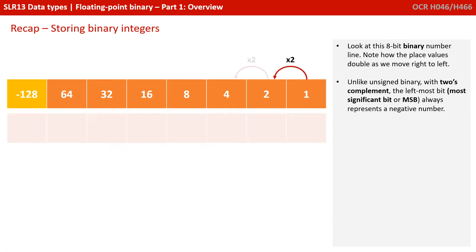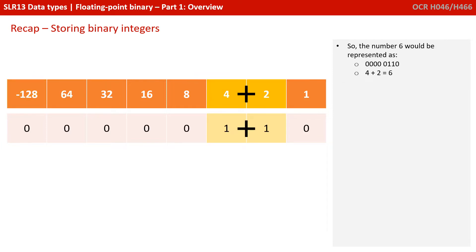Look at this 8-bit binary number line. Note how the place values double as we move right to left. Unlike unsigned binary, with 2's complement, the leftmost bit, the most significant bit, always represents a negative number. So the number 6 would be represented as 0000 0110. That's a 1 in the 4 column plus a 1 in the 2 column. 4 plus 2 is 6.